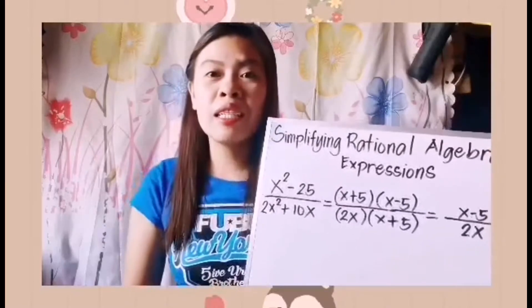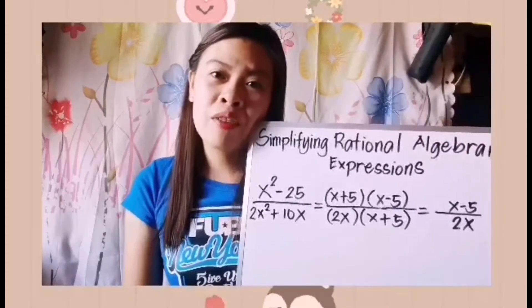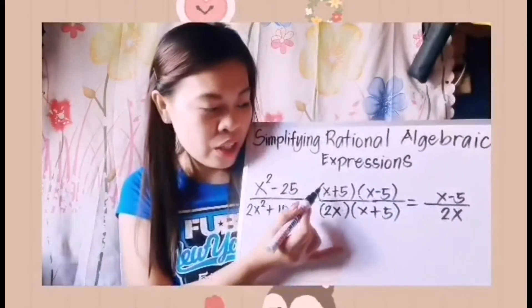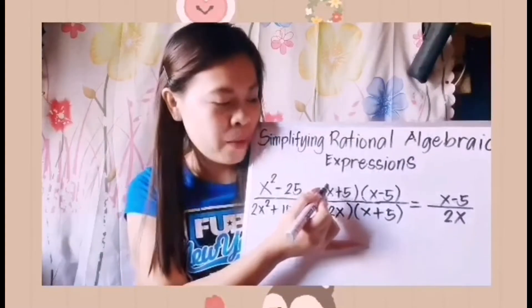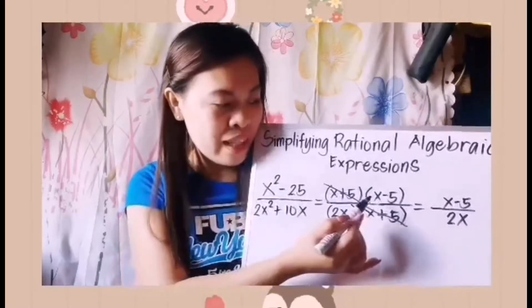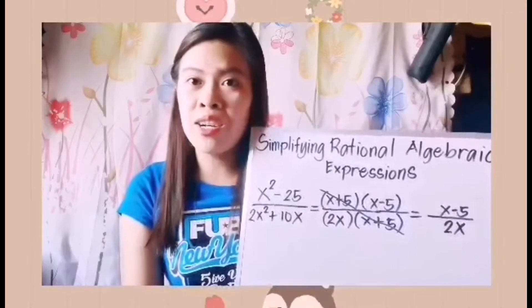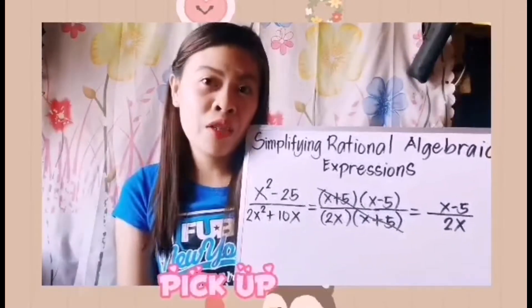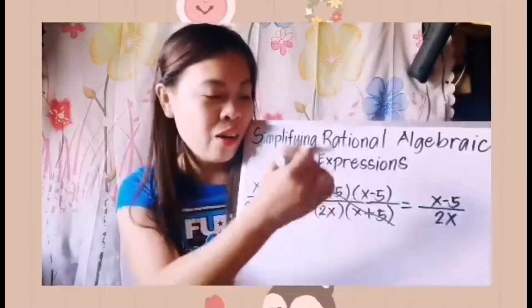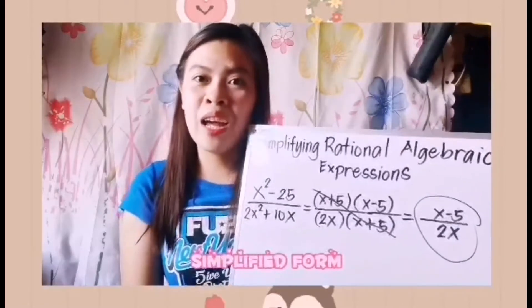After we did the factoring, after we simplified specifically our given numerator and denominator, we can now divide out common factors. Try to see if there are common factors. We have the quantity of x plus 5 in the numerator, and we can divide that out by the denominator's x plus 5. What's left is the quantity of x minus 5, and here we have 2x — they are not common to each other. So we pick up the remaining factors: x minus 5 over 2x. This will be our simplified rational algebraic expression.